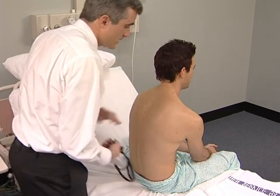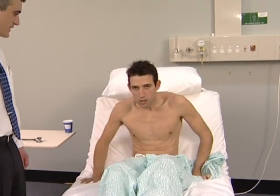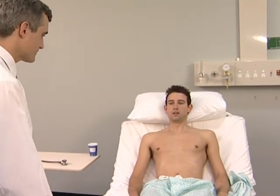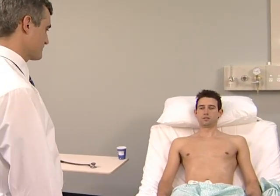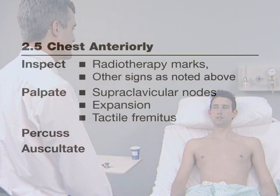Now get the patient back in bed. The examiner moves around to the front of the chest and stands back to make a general inspection for scars and for the small tattoos used as markers for radiotherapy fields. The skin may appear erythematous if the area has received a course of radiotherapy. The supraclavicular nodes are examined here if this has not been done from behind.